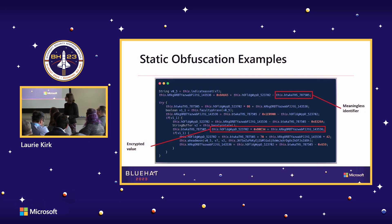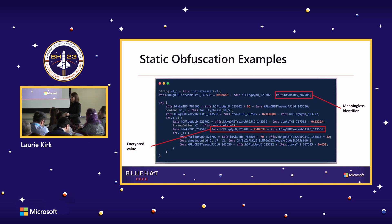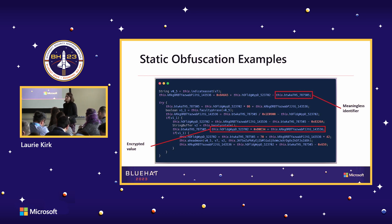Looking at a couple of examples: on the top right is a trojanized banking Android application that uses identifier renaming. All variable names were renamed to a meaningless string of characters followed by a meaningless string of numbers, which is very frustrating — you have to go into every single method and rename those identifiers yourself. They also used value encryption: all of these are actually string values, but you can't tell from disk because they performed additions, subtractions, and multiplications between the strings to hide them.